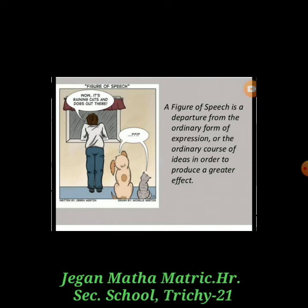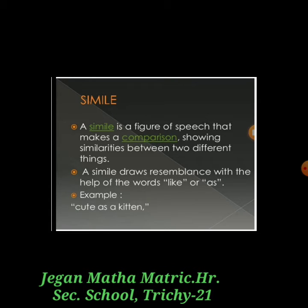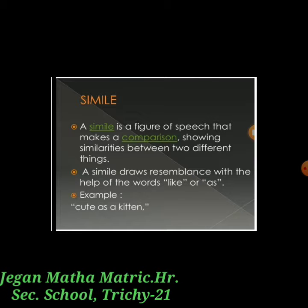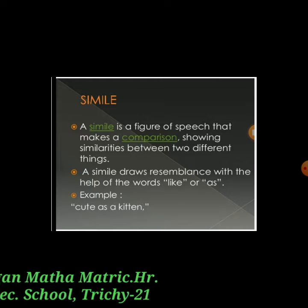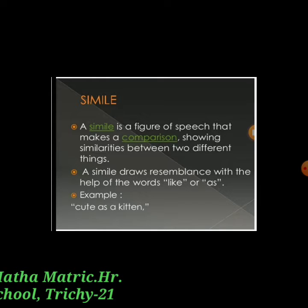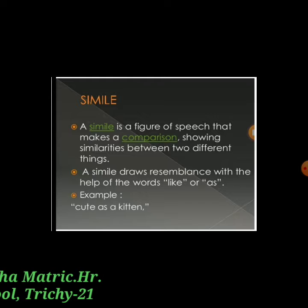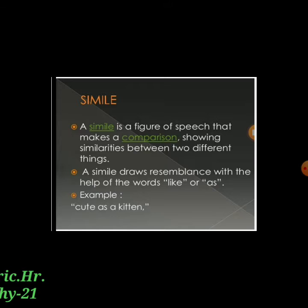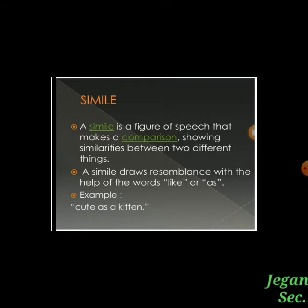The first figure of speech is simile. A simile is a figure of speech that makes a direct comparison, showing similarities between two different things. A simile draws resemblance with the help of the words 'like' or 'as.' For example, 'cute as a kitten.' The clue words are 'like' or 'as' — if we see these in a sentence, it is a simile.